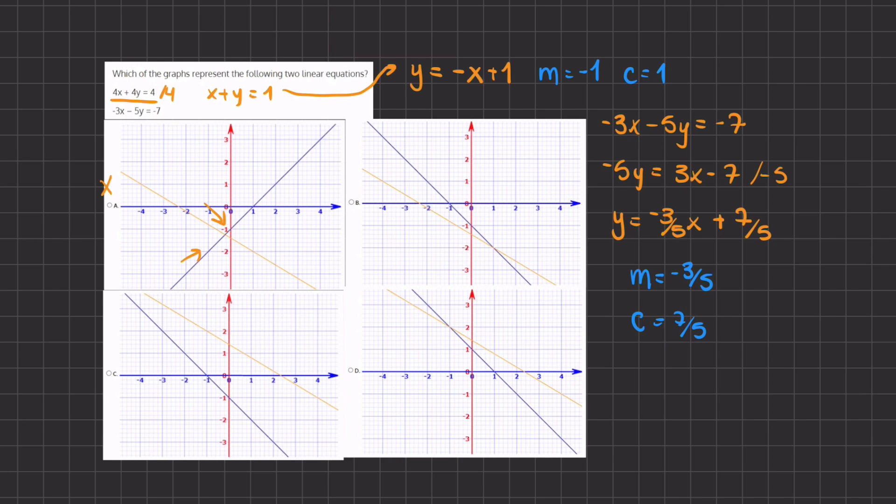Alright, so now if we take a look at our graphs, we are looking for the y-intercepts. Our first y-intercept we are looking for is at positive 1, and our second one is at 7 fifths.